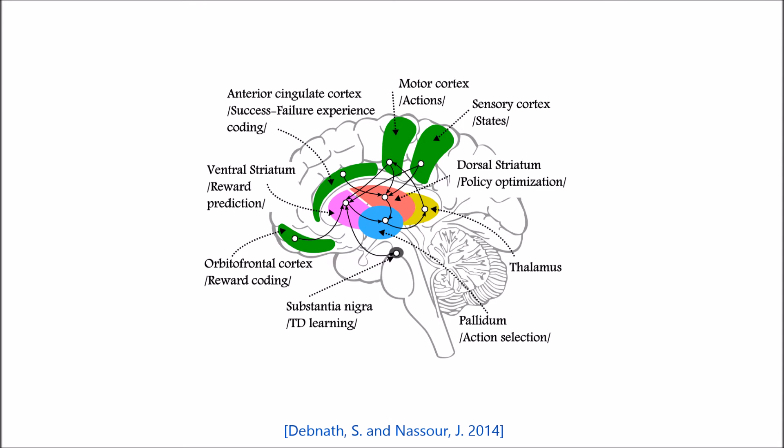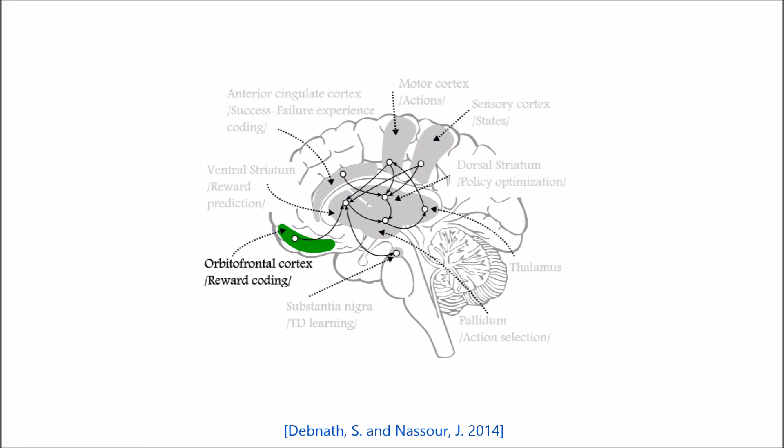This paper introduces an extended model of reinforcement learning in the cortex basal ganglia network by the hypothetical involvement of two cortical regions, the orbitofrontal cortex and the anterior cingulate cortex.